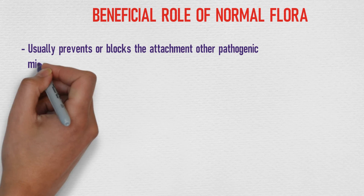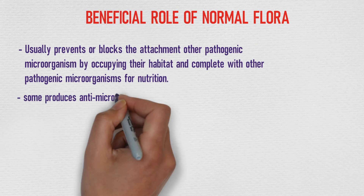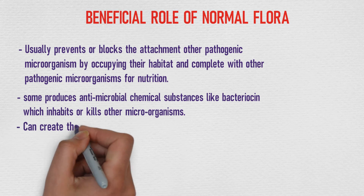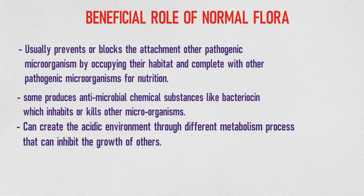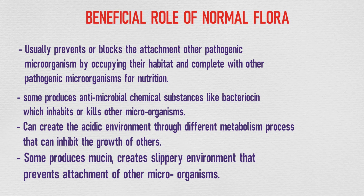Now let's discuss the beneficial role of normal flora. Normal flora usually prevents or blocks the attachment of other pathogenic microorganisms by occupying their habitat and competing for nutrition. Some normal flora produce antimicrobial chemical substances, and some can create an acidic environment through metabolic processes that inhibit the growth of others. Additionally, some normal flora produce mucin, which creates a slippery environment that prevents the attachment of other microorganisms.